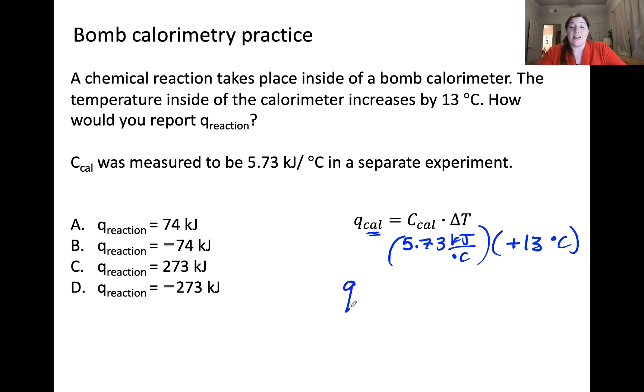We can then calculate that Q of the calorimeter is equal to 74 kilojoules. Now, you'll notice this is an answer choice, but this is not the heat associated with the reaction. Remember, Q of calorimeter is equal to negative Q of reaction.